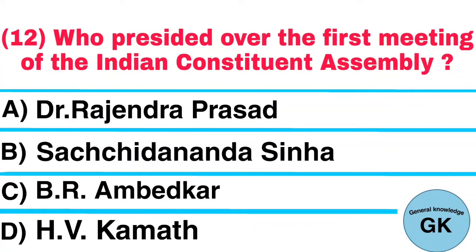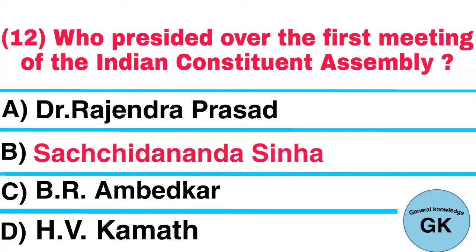Question number 12. Who presided over the first meeting of the Indian Constituent Assembly? A. Dr. Rajendra Prasad, B. Satchidananda Sinha, C. B.R. Ambedkar, D. H.V. Kamath. Answer: Satchidananda Sinha.